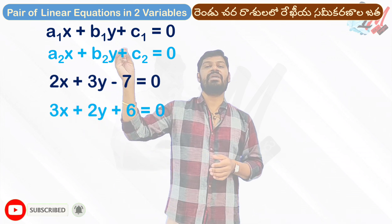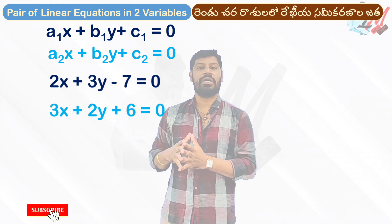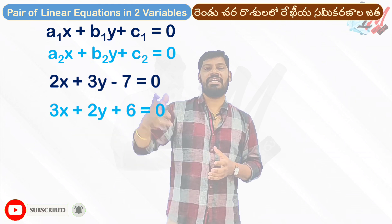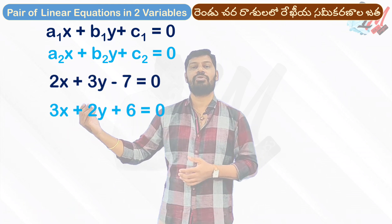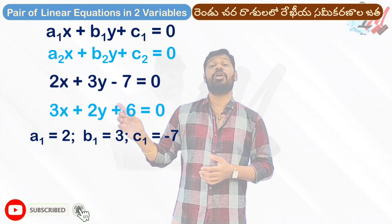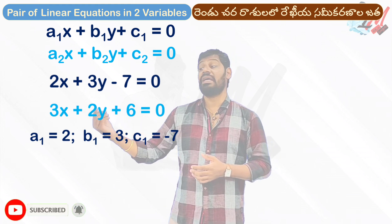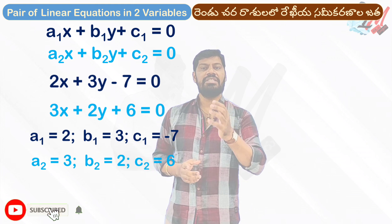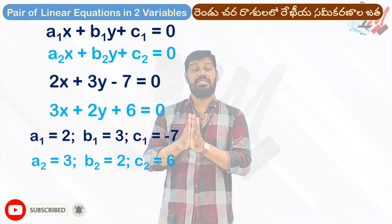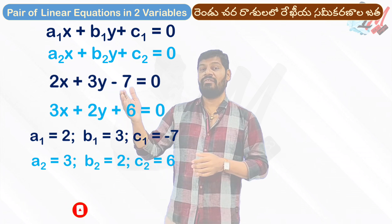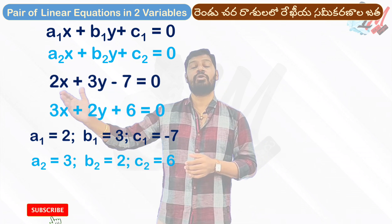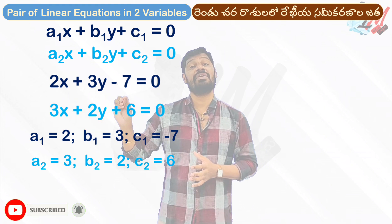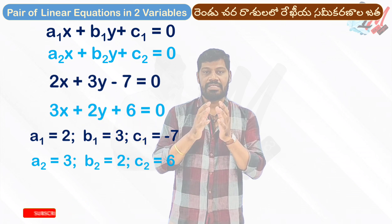You compare these equations with the general form to extract a1, b1, c1, a2, b2, c2 values. Compare the first equation to the general first equation and the second equation to the general second equation, finding a1, b1, c1, a2, b2, c2 by matching the x-term, y-term, and constant term.